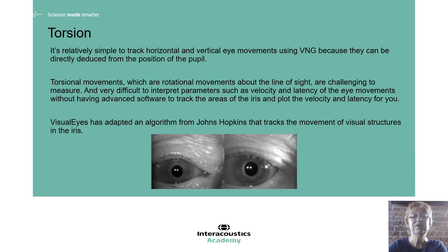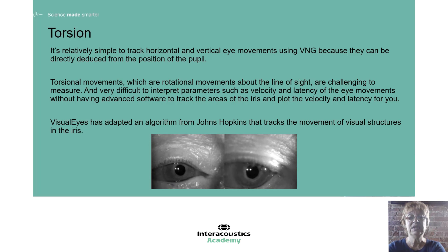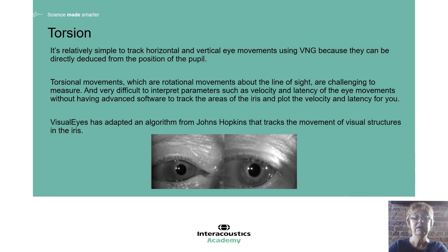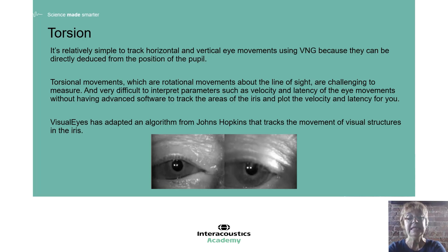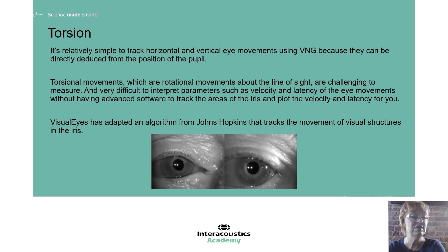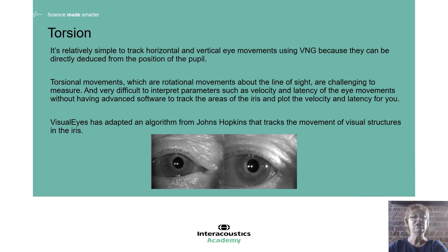Here in this video you can see a typical BPPV patient, and you can see that torsional eye movement — the slow phases and the fast phases. I'm pretty sure that it's there, but what I can't see is how fast was it. Was it 20 degrees per second or was it 40 degrees per second? How long did it take before it got back to zero, and did it peak and quickly come down, or did it slow down over time?